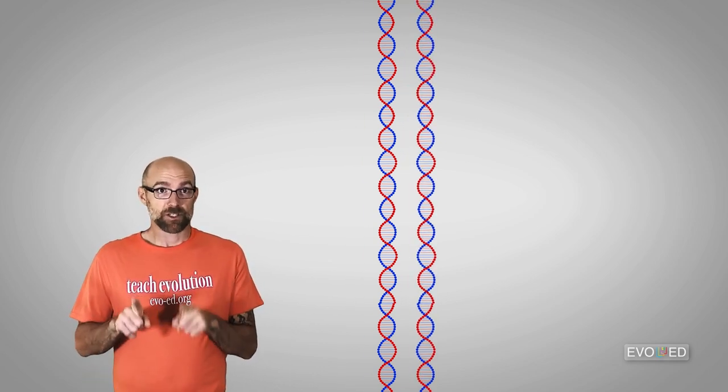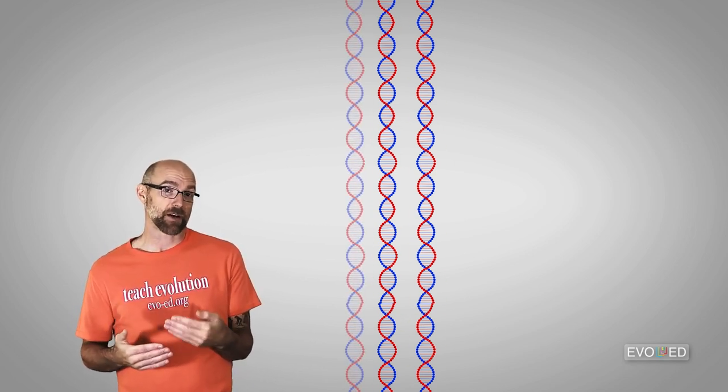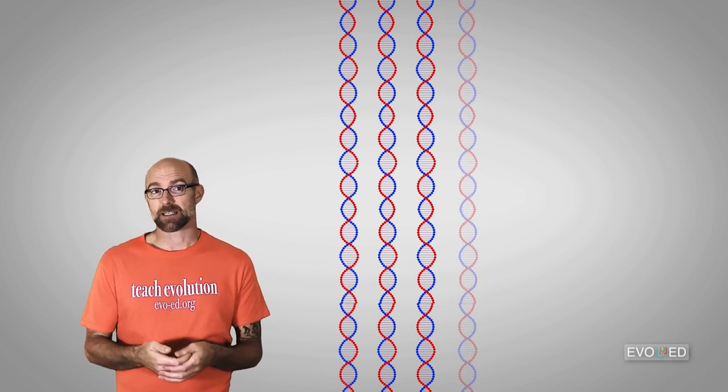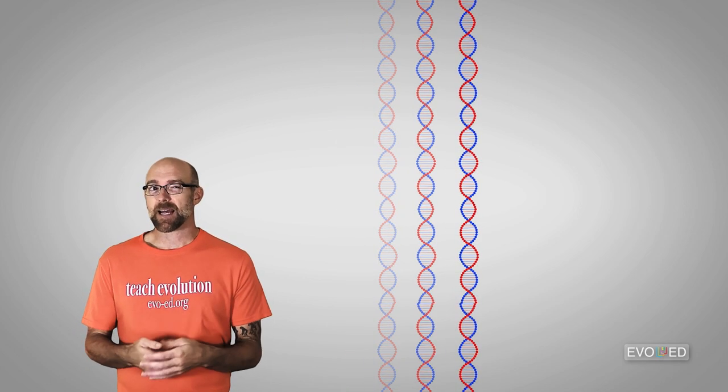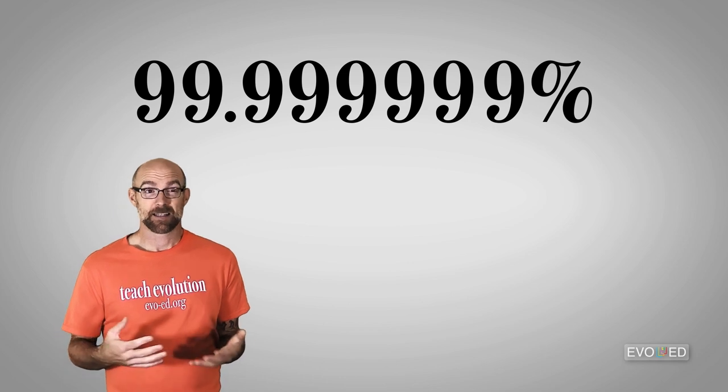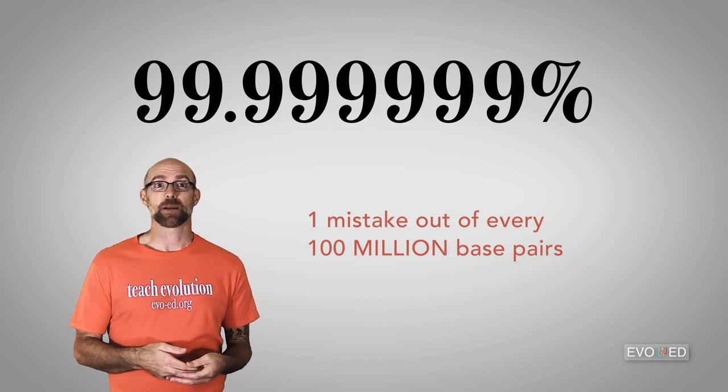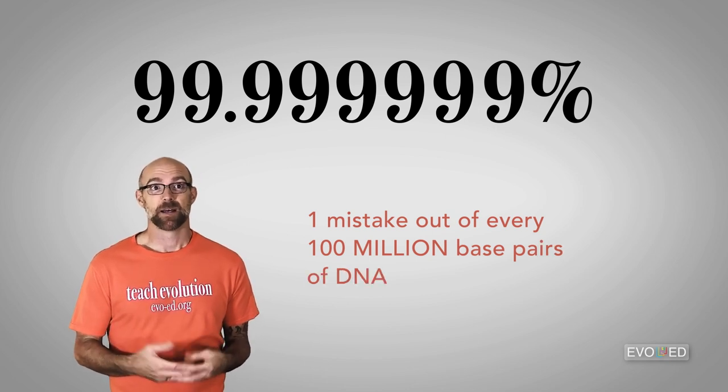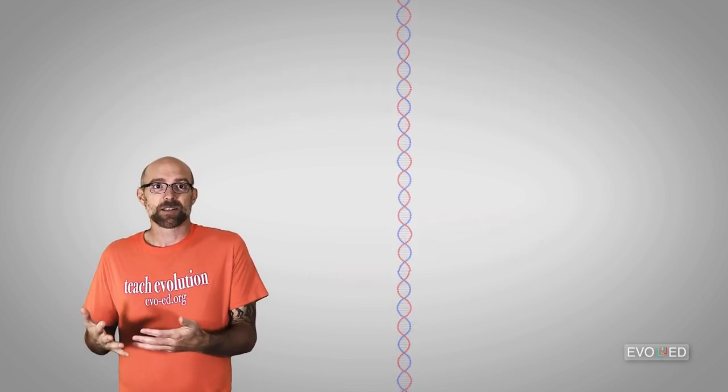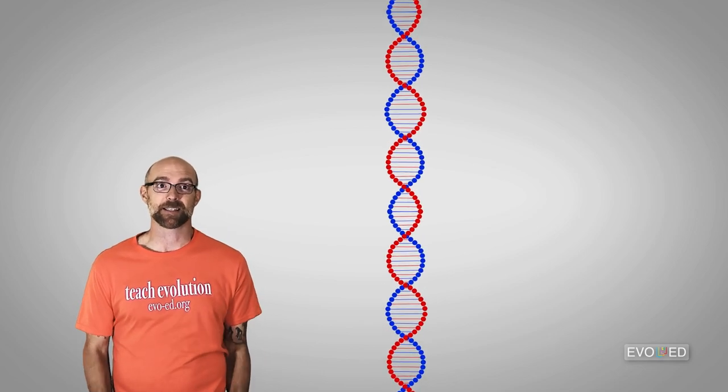I mean, the machinery is good. It's really, really good. Our DNA copying machinery in our cells, essentially it's a set of enzymes, can copy DNA with an accuracy of about 99.9999999%. That's only about one mistake out of every 100 million base pairs of DNA that it copies. The kicker is this, though.